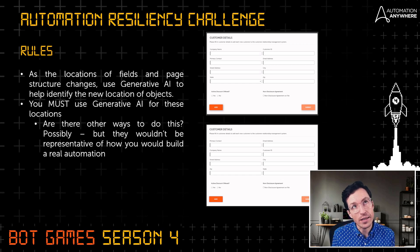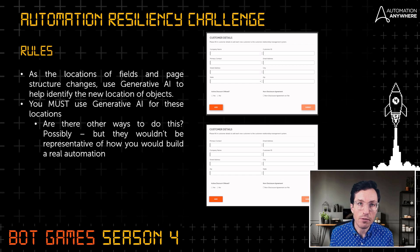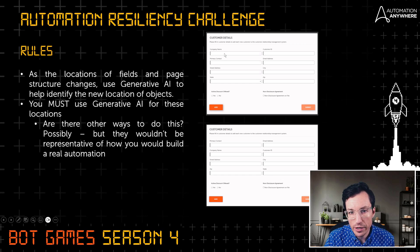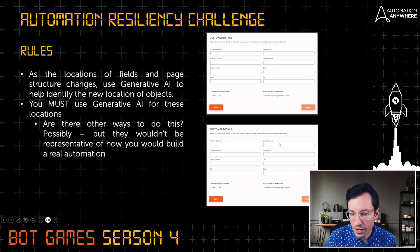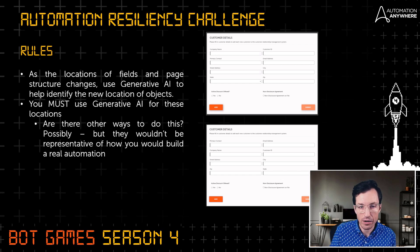There are other ways to solve this — some hacky JavaScript approaches — but that's not how you would normally build an automation. We want to get you into the habit of thinking about how to build more resilient automations. For example, company name may be in the top left and customer ID in the top right, but then primary contact is top left and email address is top right — these fields switch around as your automation is filling out the customer details and clicking Add each time.